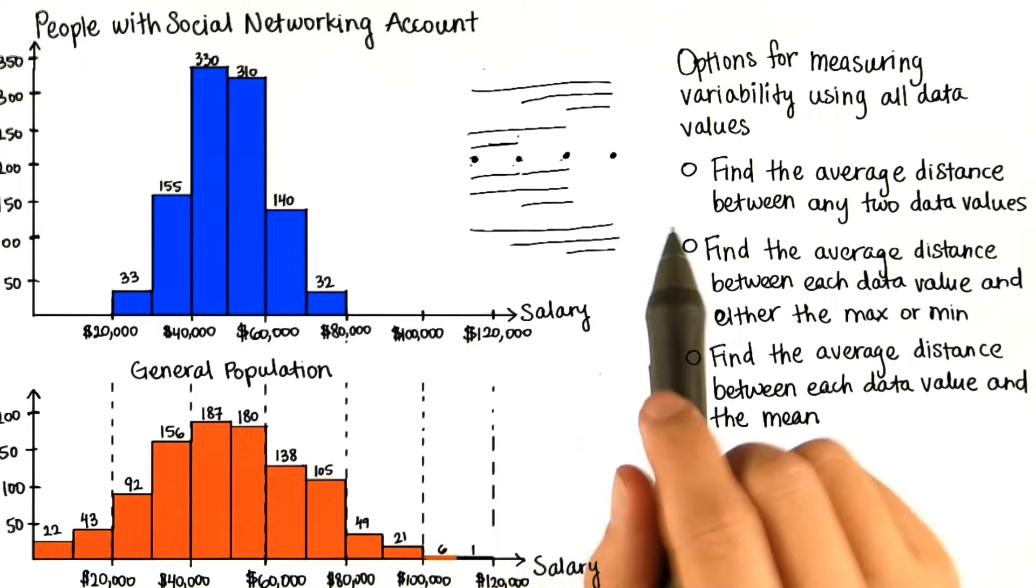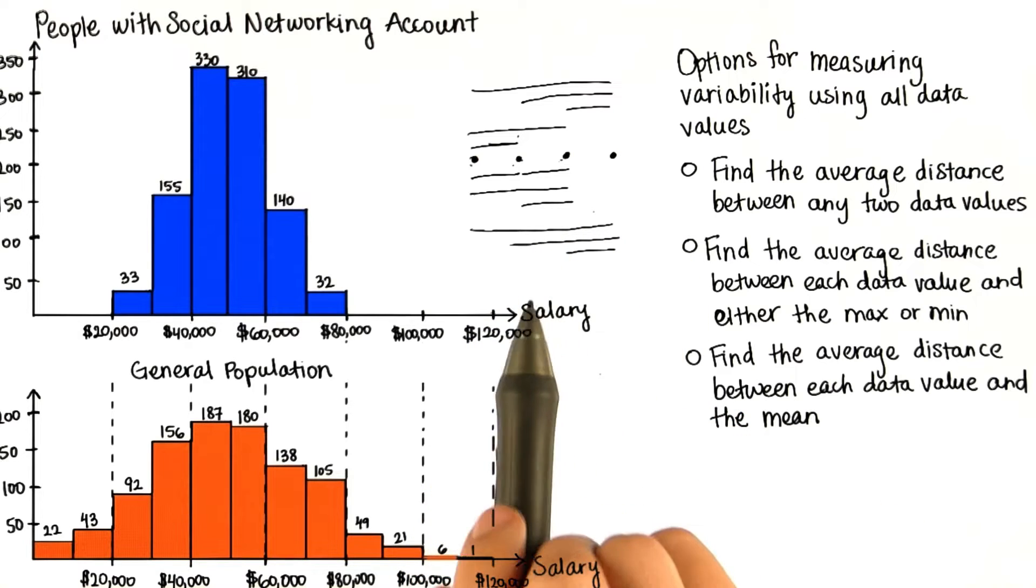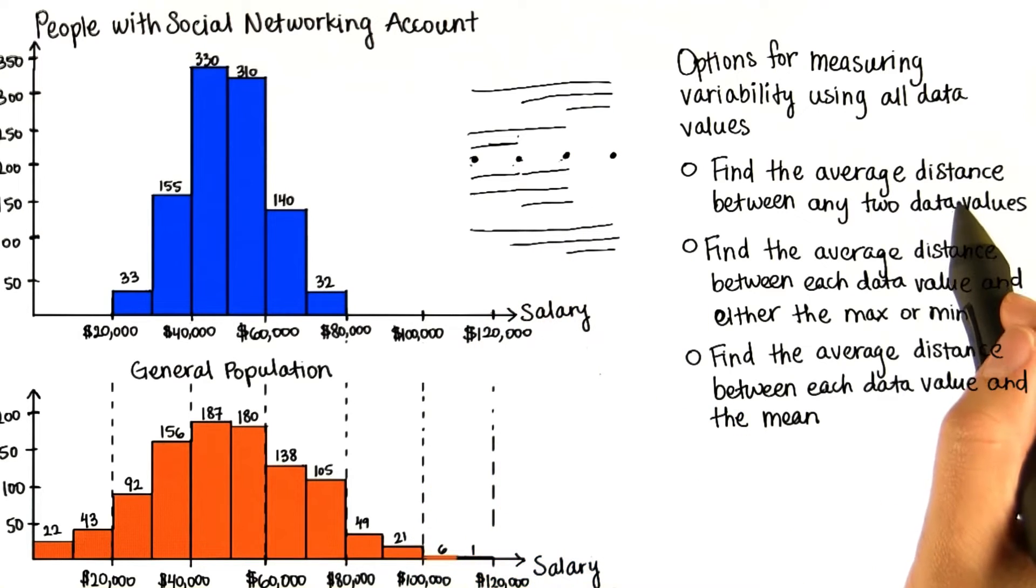Now imagine if we had 1,000 data values, which is very typical for a data set. This one just isn't feasible. There are way too many things to calculate.